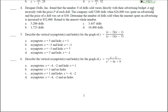Number 5: describe the vertical asymptotes and holes for the graph. A vertical asymptote is when you cannot cancel a factor in the denominator with one in the numerator, and a hole is when you can. We can cancel out the x minus 1 factors, giving a hole at x equals 1. The x minus 5 cannot be removed, so we have a vertical asymptote at x equals 5. Number 5 is A.